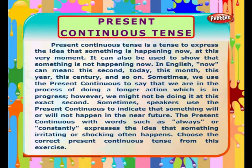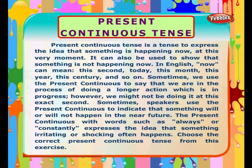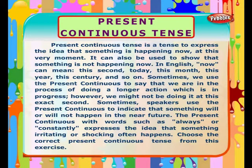Present continuous tense is a tense used to express the idea that something is happening now, at this very moment. It can also be used to show that something is not happening now. In English, 'now' can mean this second, today, this month, this year, this century, and so on.